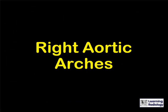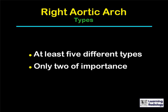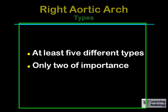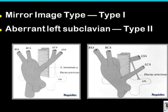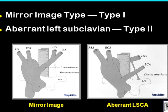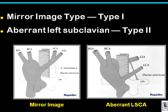Right aortic arches come in at least five different types, but only two are of major importance: the mirror image type, also called Type 1, and the right aortic arch with an aberrant left subclavian artery, which is Type 2.